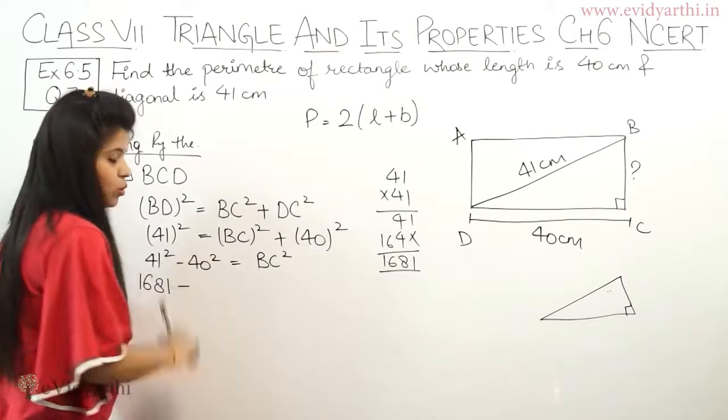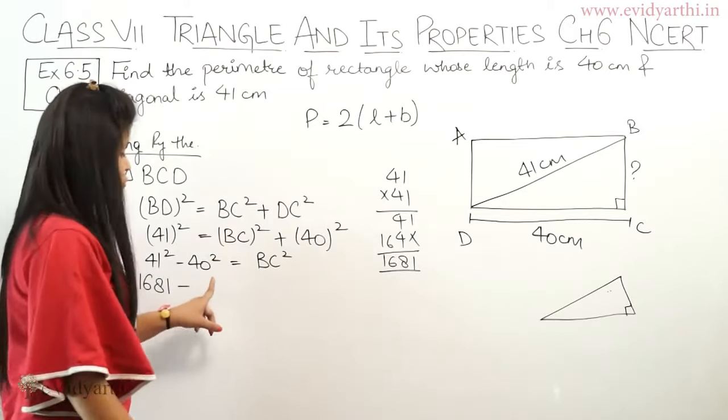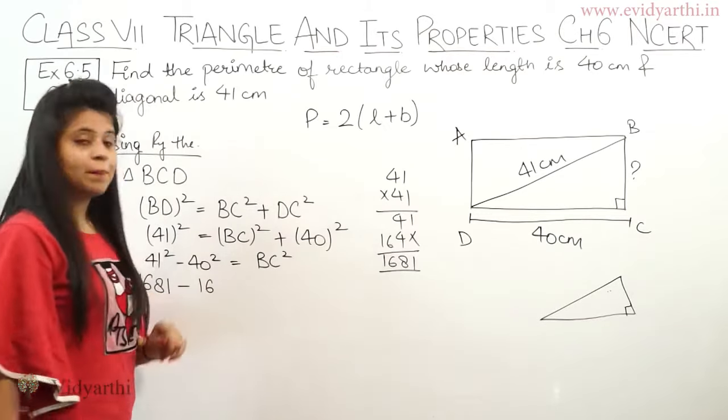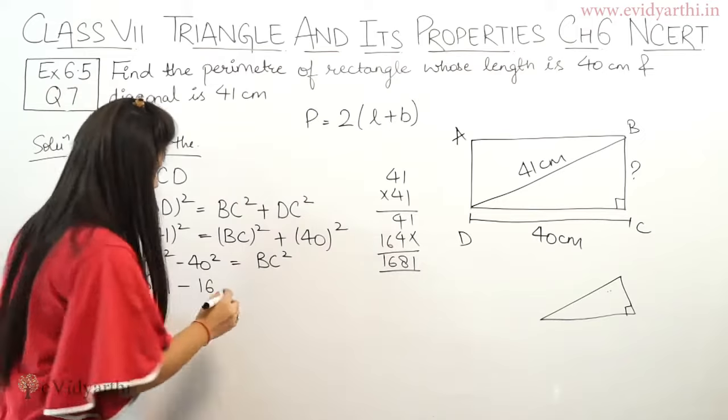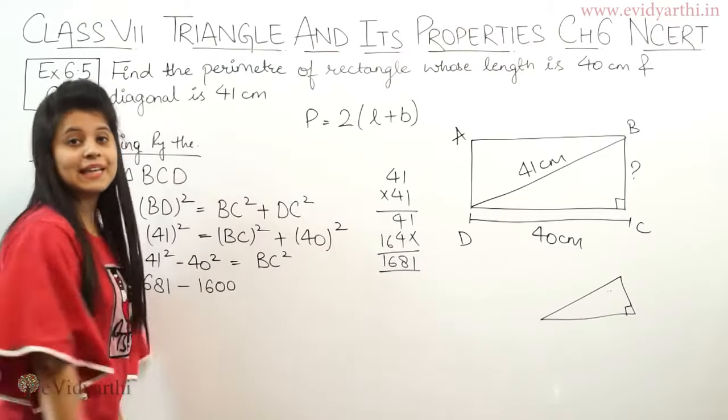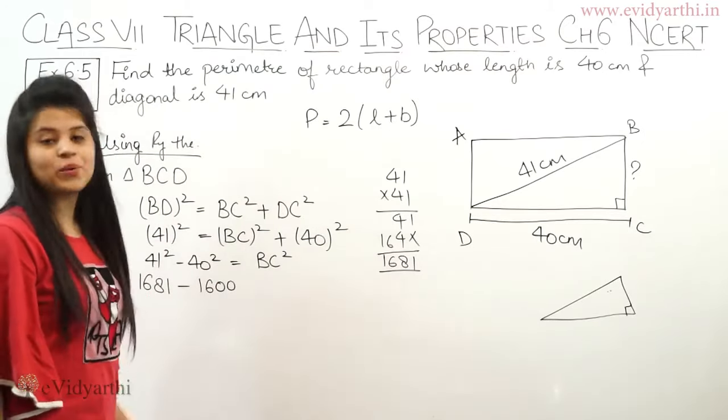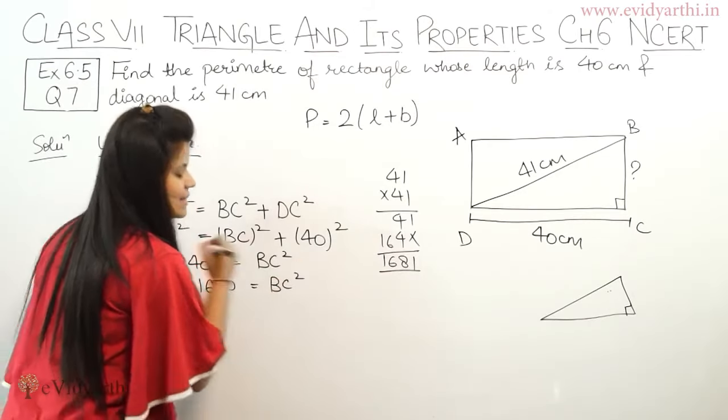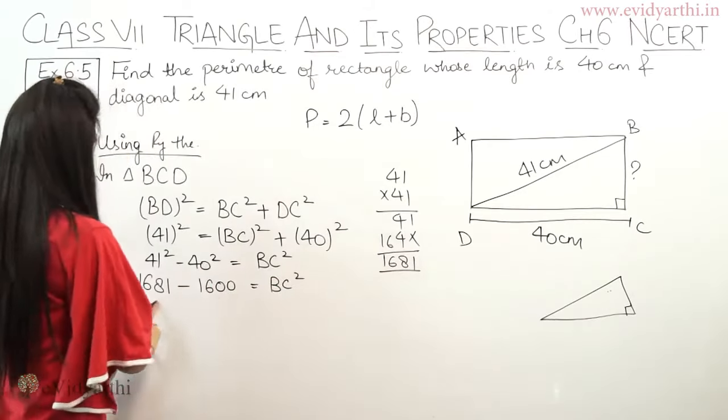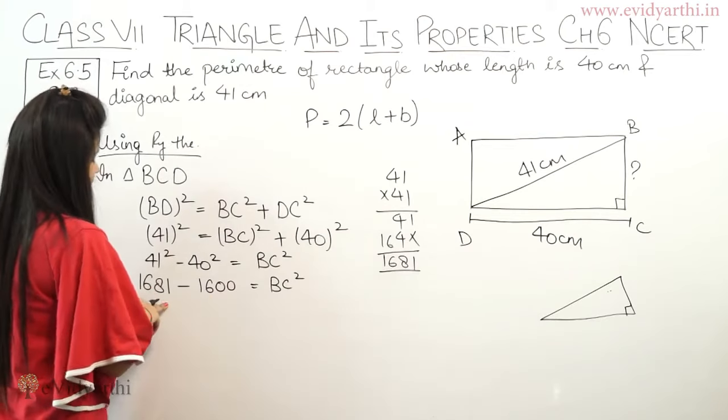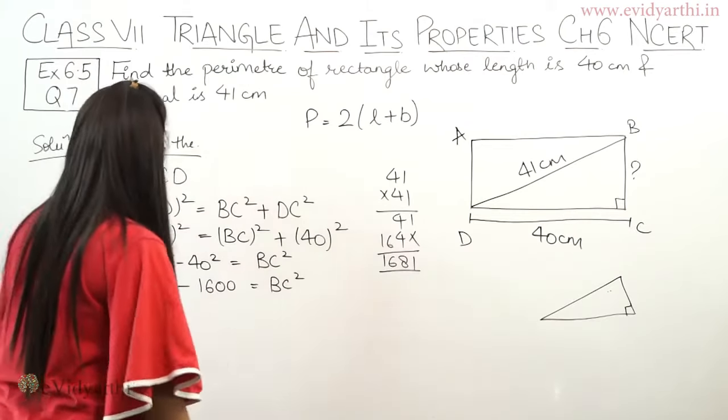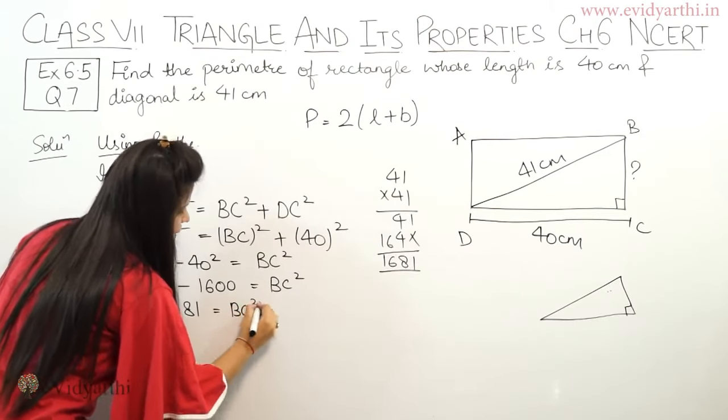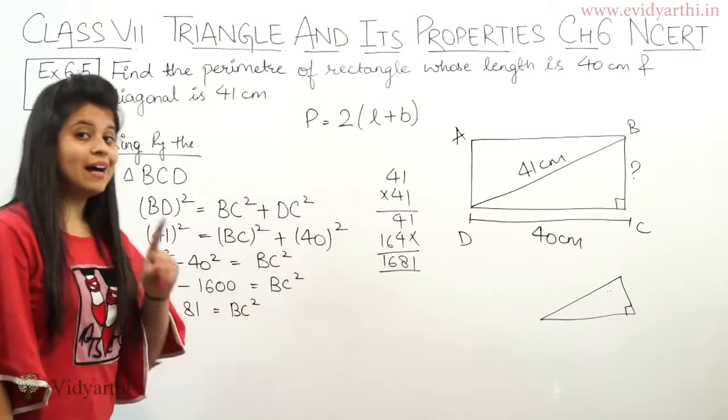So here we have 1681 minus 40². Now 40² is very easy. 40 into 40, so 16 with 2 zeros, that's 1600.